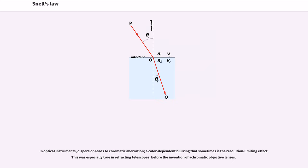In optical instruments, dispersion leads to chromatic aberration, a color-dependent blurring that sometimes is the resolution-limiting effect. This was especially true in refracting telescopes, before the invention of achromatic objective lenses.